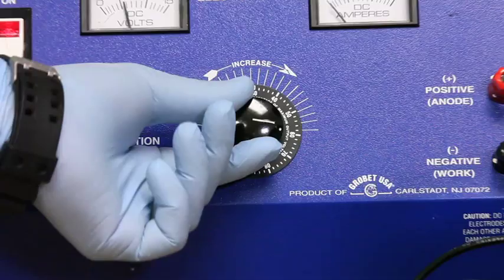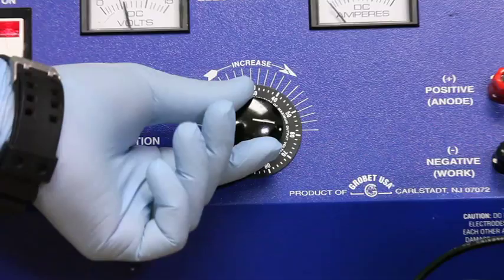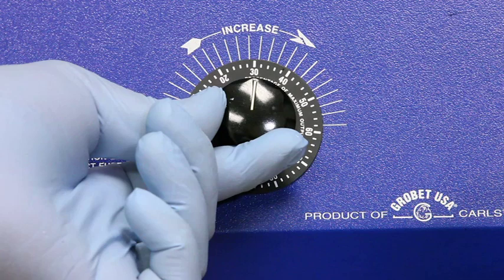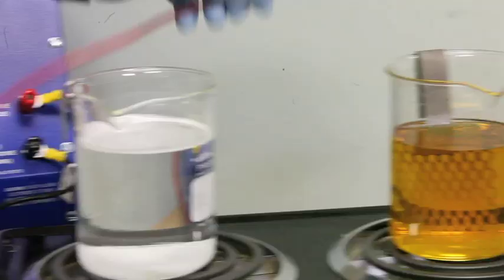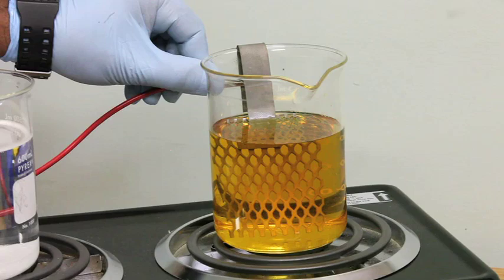While the piece is in the activator, readjust the rectifier to three volts and place the positive lead on the platinized titanium anode in the Rhodium solution. Remove the piece from the activator and rinse in distilled water.